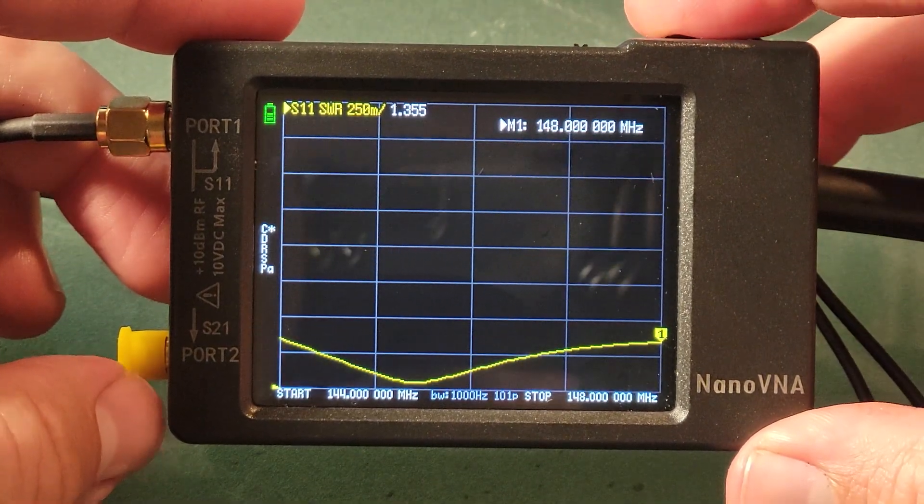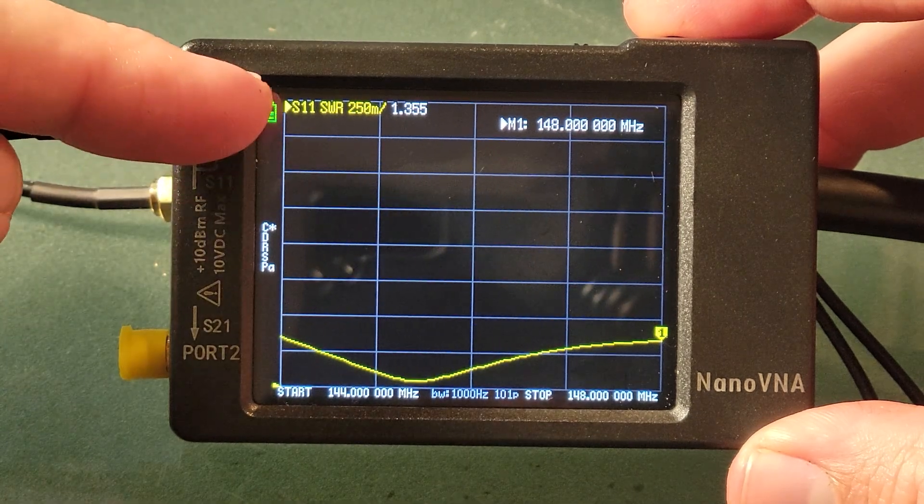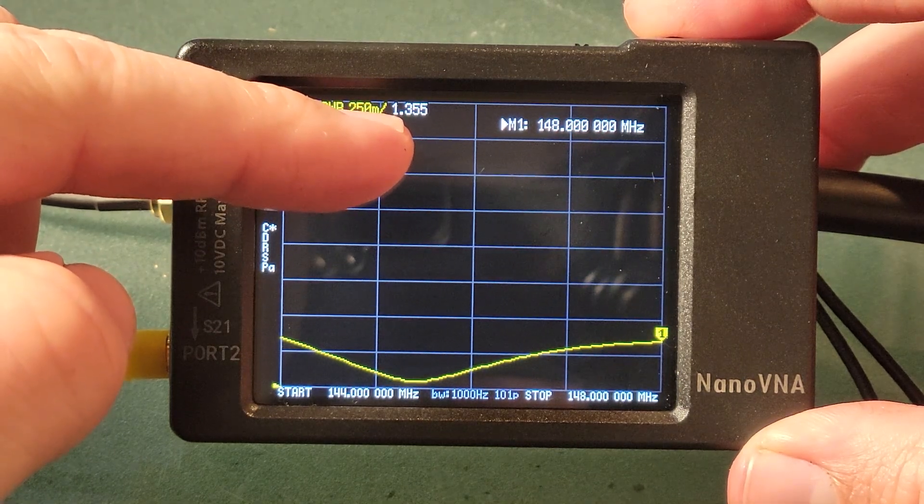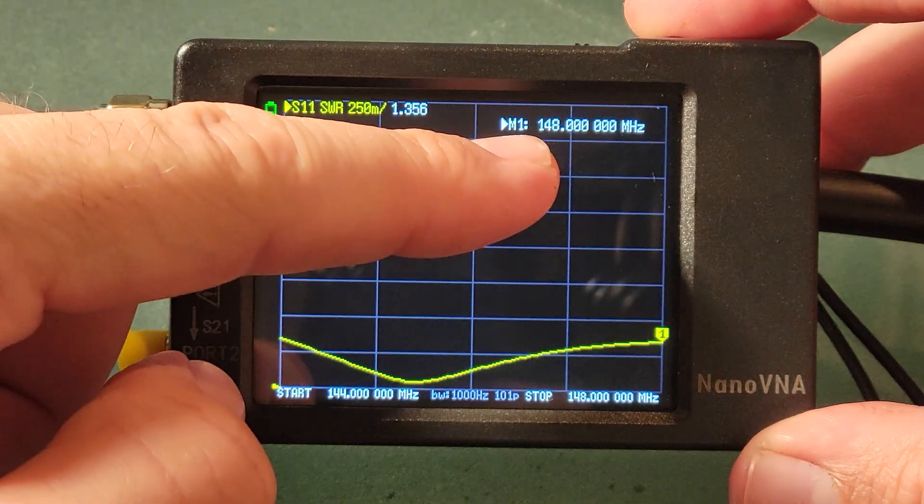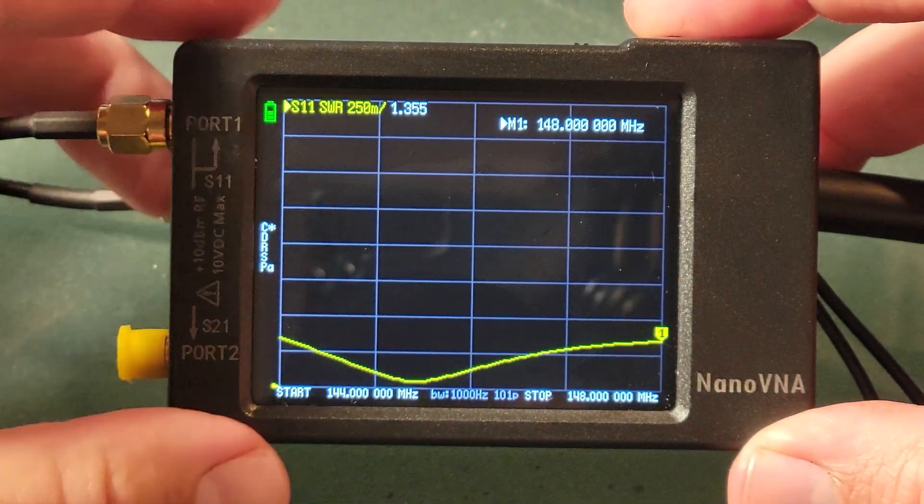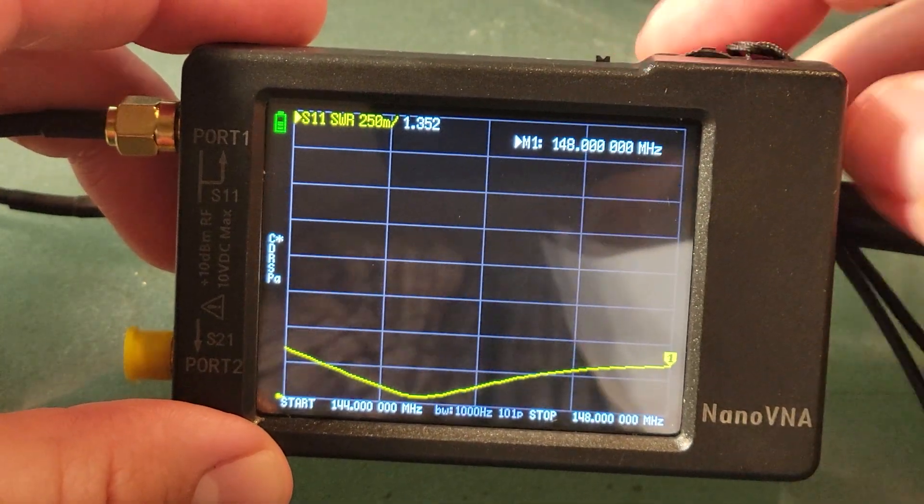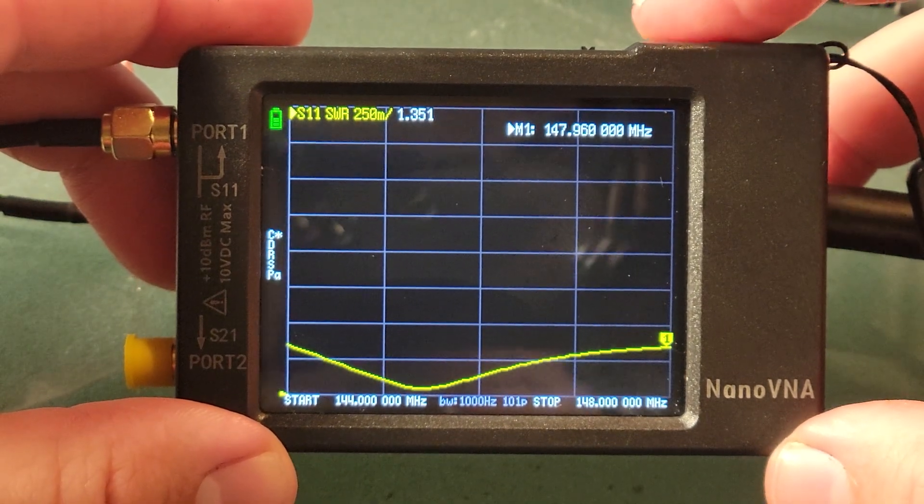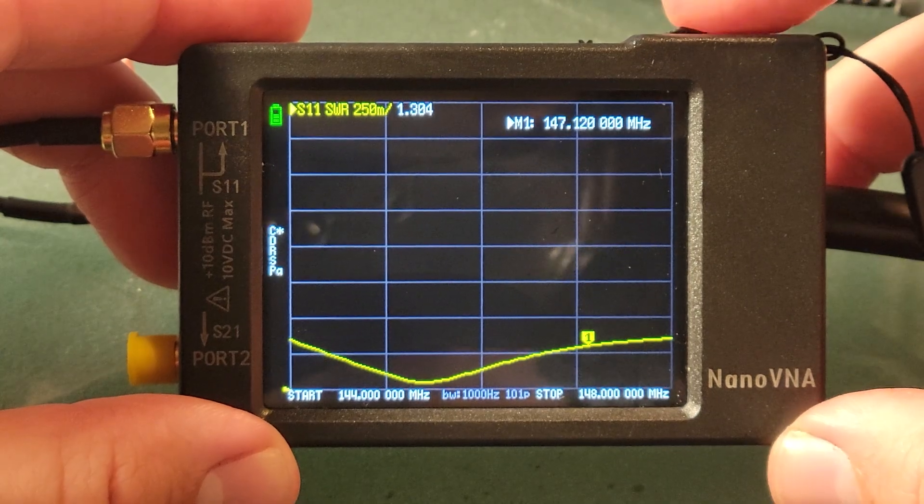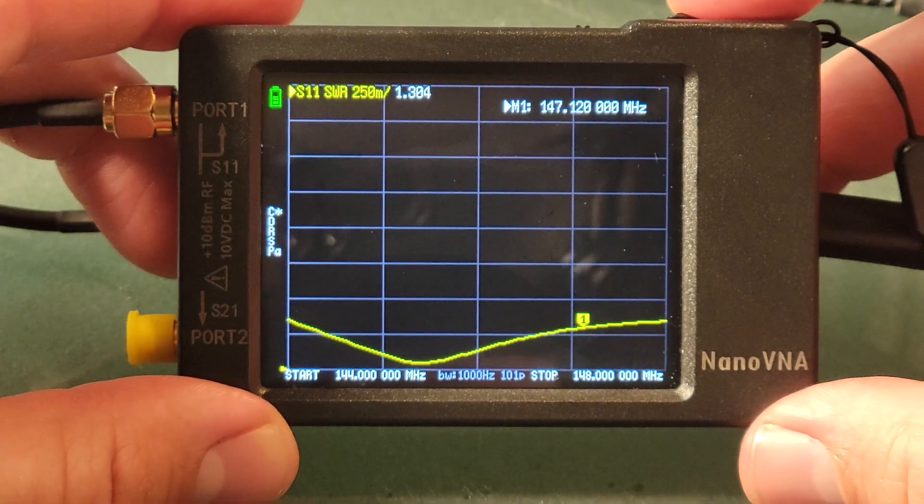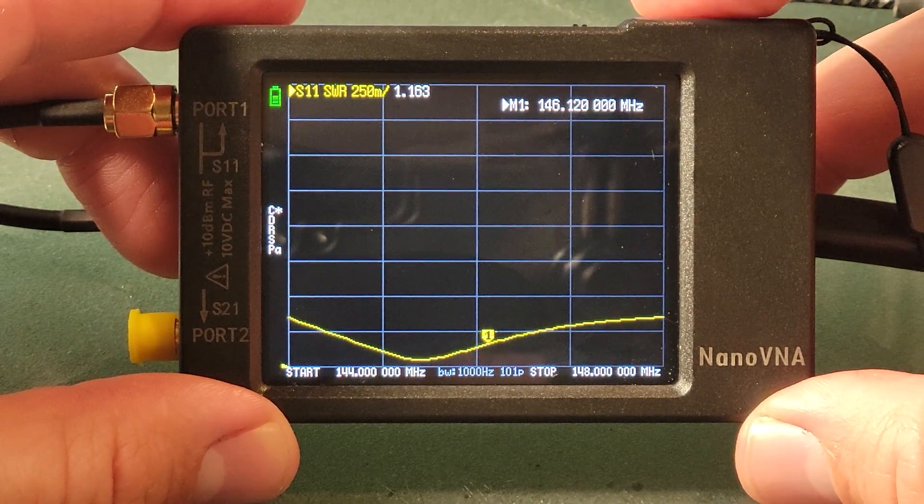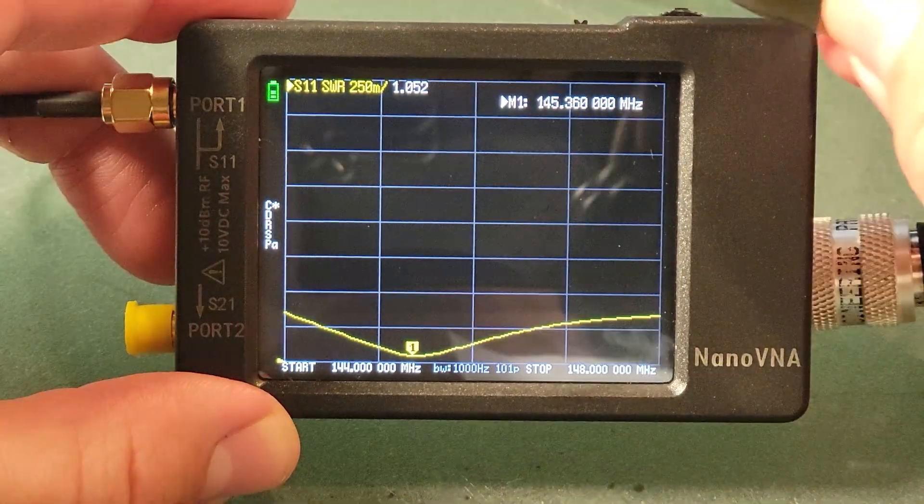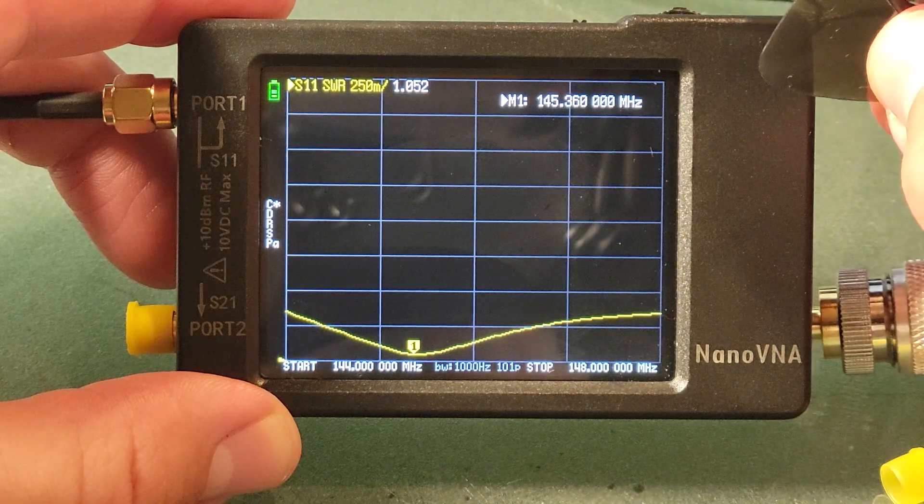Once we have gotten a reading, notice that our trace is listed there. We're looking at port one or S11. And it does tell us in the white text there what the SWR reading is at measurement point 148 megahertz. And then we can use our jog wheel at the top. There's a little bit hidden by the cord. And you just see it there at the very top. And if you move it to the left, notice as it goes along, the white text here marked as M1 will move in correspondence. You can see exactly what your SWR reading is at any given point on that line.